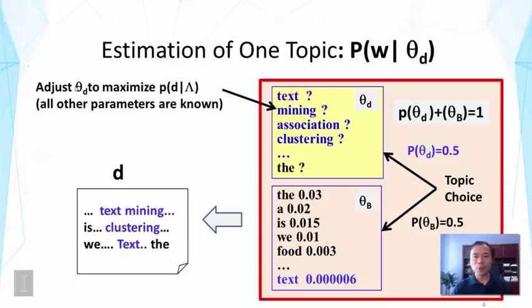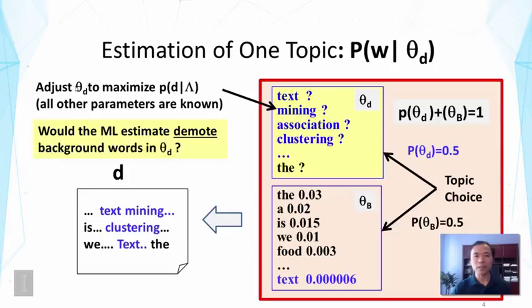Now, although we designed the model heuristically to try to factor out these background words, it's unclear whether if we use maximum likelihood estimator, we will actually end up having a word distribution where the common words like the will be indeed having smaller probabilities than before.